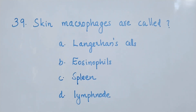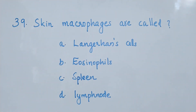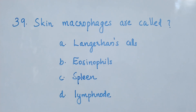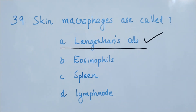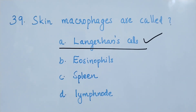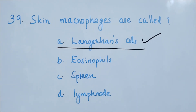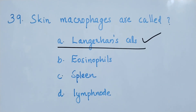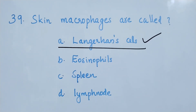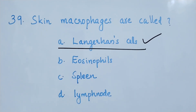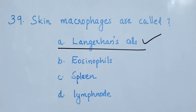Which of the following cells is also known as skin macrophages? The right answer is option A, Langerhans cells. Langerhans cells, present in the epidermis layer of skin, are also called skin macrophages.